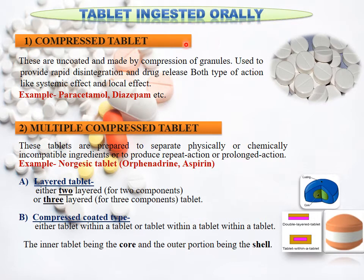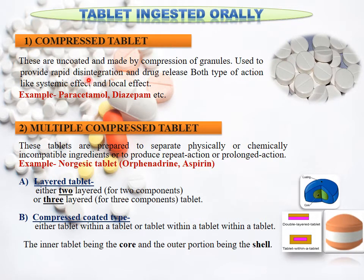Now, what is a compressed tablet? Compressed tablets are mainly uncoated tablets. Since they are not coated, they have a rapid disintegration rate — the drug is released quickly. They show both systemic and local types of action. Examples include paracetamol and diazepam. The marketed preparation Dolo 650 is a plain paracetamol which is uncoated, that's why its dissolution and disintegration rate is high and quick.